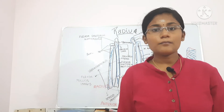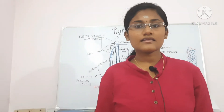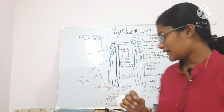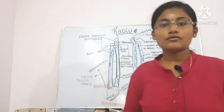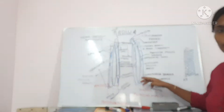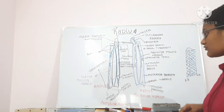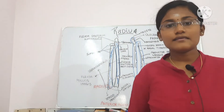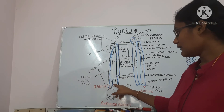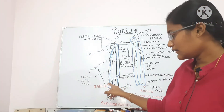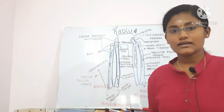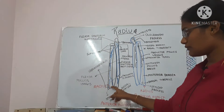The posterior surface presents four grooves, and the dorsal tubercle lies lateral to the oblique groove. The medial surface forms the ulnar notch of the radius, and the articular disc of the radioulnar joint is attached to the lower margin of the ulnar notch.